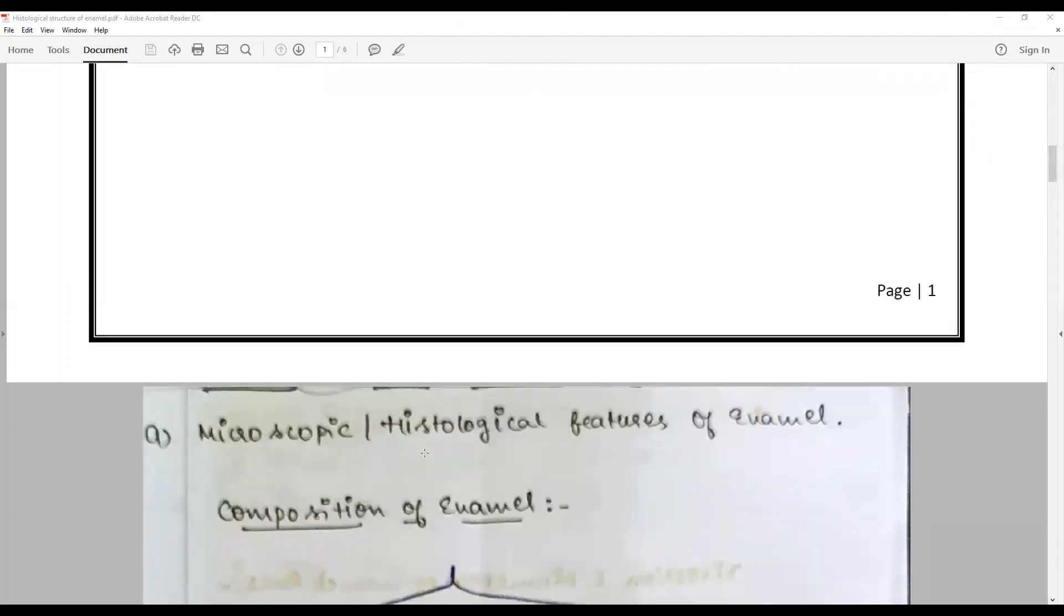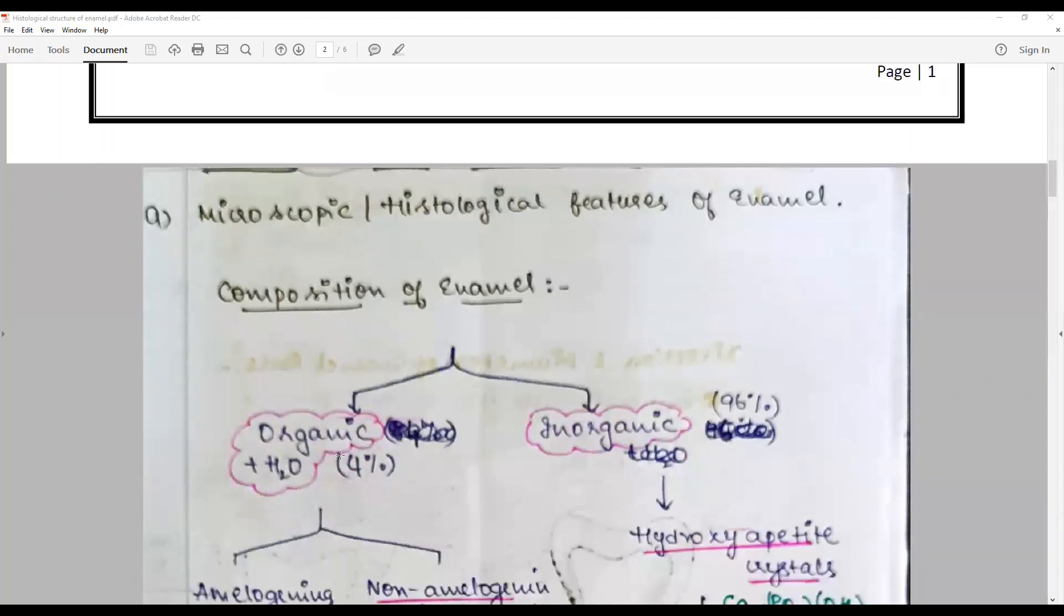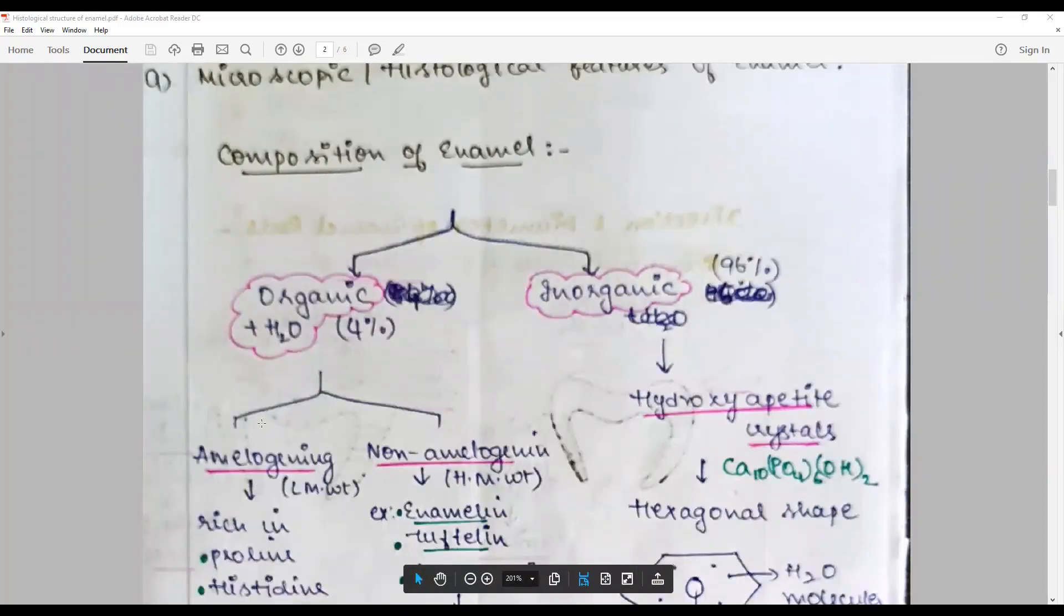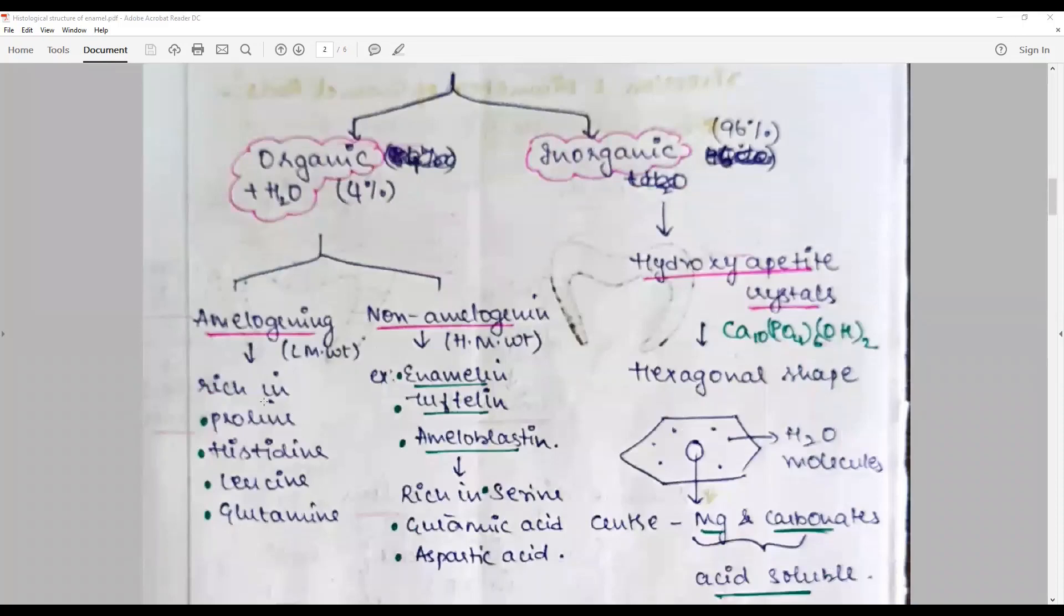Taking a dip into the answers, the composition of enamel is divided into organic and inorganic. Primarily the inorganic is about 96 percent, the organic and water constitutes 4 percent, and mostly the organic is amelogenin and non-amelogenin. Amelogenins are low molecular weight proteins, non-amelogenins are high molecular weight. They are rich in proline, histidine, leucine and glutamine, whereas non-amelogenins like amelogenin, tuftelin, and ameloblastins are rich in serine, glutamic and aspartic acids.